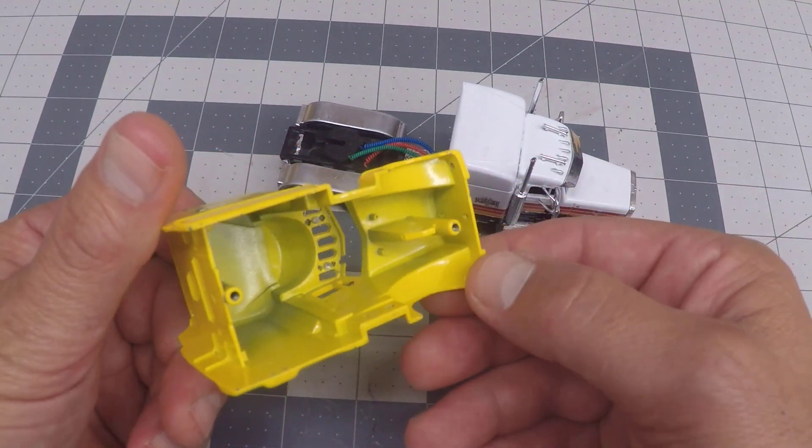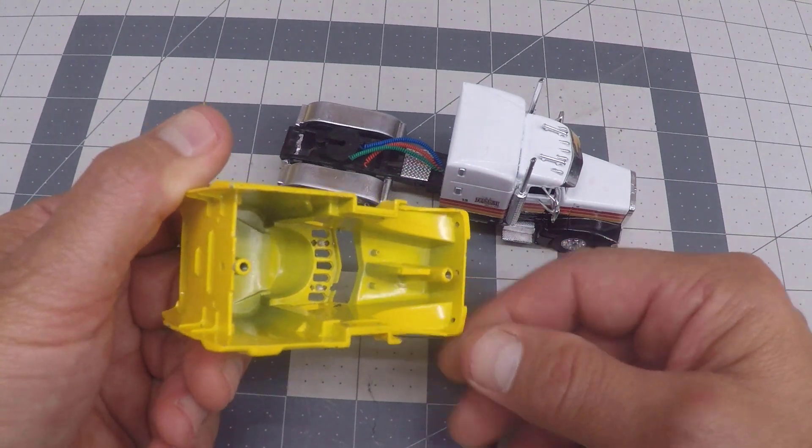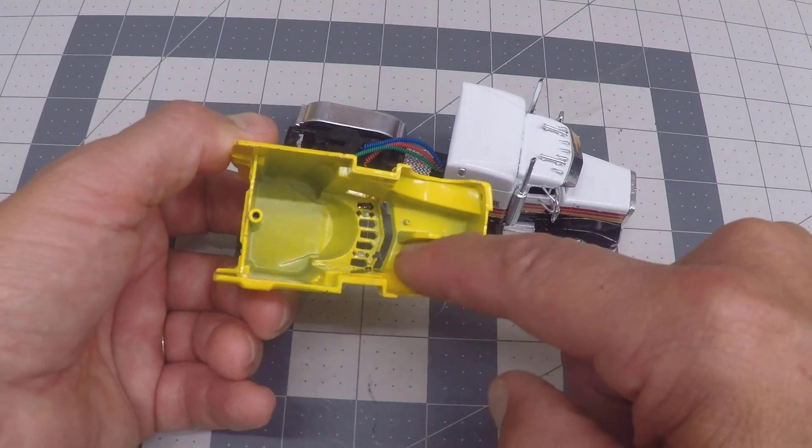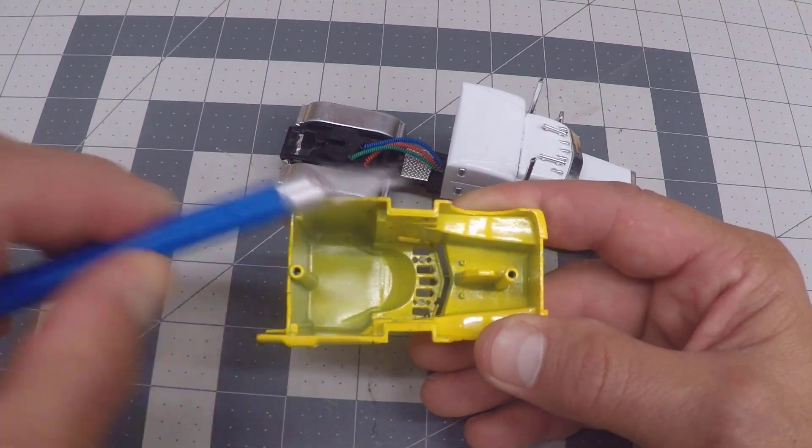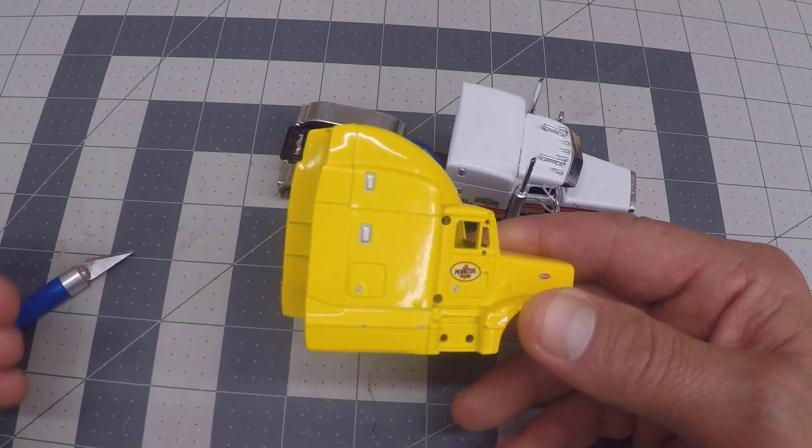The grill and the headlights all pop out by cutting away the mashed plastic on the back side, and then you can push them out really easily. The interior lifts out and is held in place by these two posts down here in the bottom of the die cast. So really simple trucks to take apart, and frankly, I think they're a little underrated.